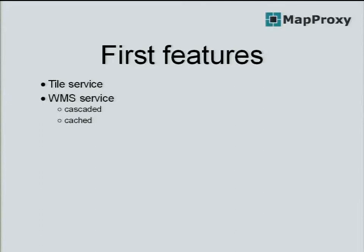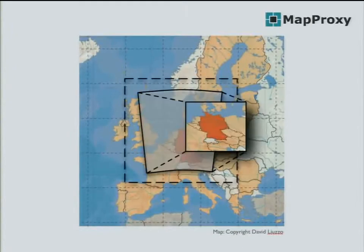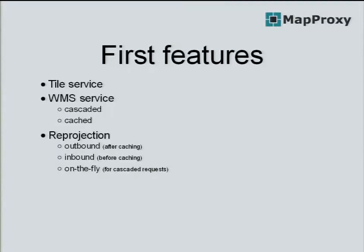We also supported responding to a WMS request from cached data, which is quite unique for MapProxy. When a request comes in, MapProxy combines multiple tiles affected by that request, creates one image, merges the tiles together, and scales them to the exact resolution requested by the user. It even supports reprojection — so when your cache is in one projection but the user requests another, it does the reprojection on the fly.